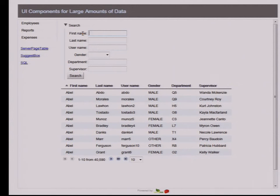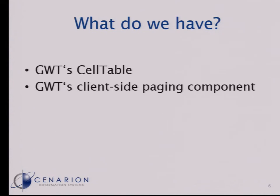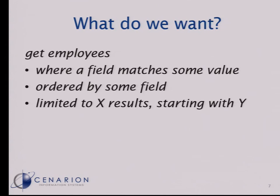How do we get there? Starting with what GWT provides. What GWT provides is a cell table — a tabular component that allows you to display a table as we have seen. But it's just a client-side component. You can push some employees to the client and display them, but there's no support for thousands of employees because you don't want to send all those thousands to the client. It has some paging component, and this is also a client-side paging component.